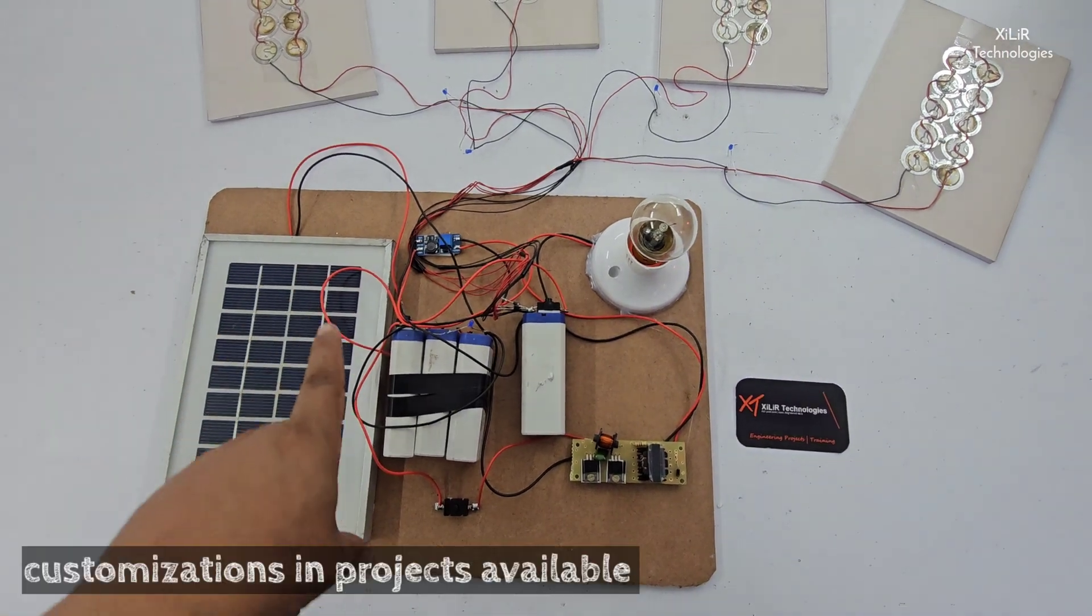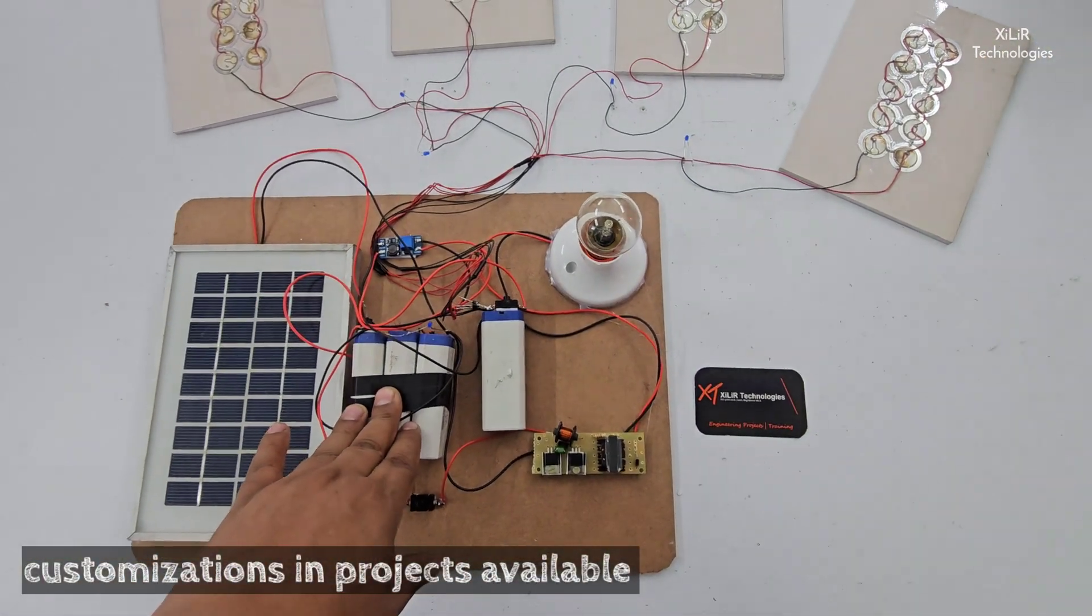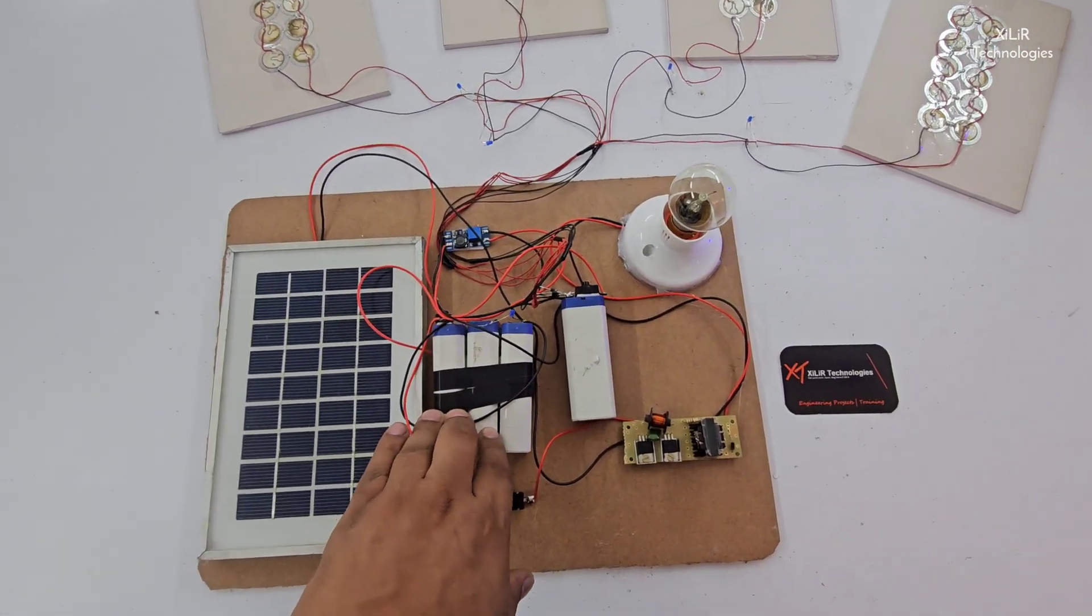So this voltage will go to these batteries. These are three batteries connected in series. This is the 4 volt battery like this one. So these batteries will create a potential of 12 volts.